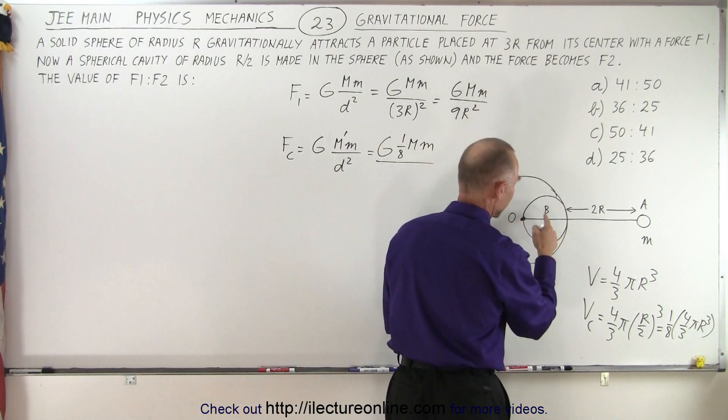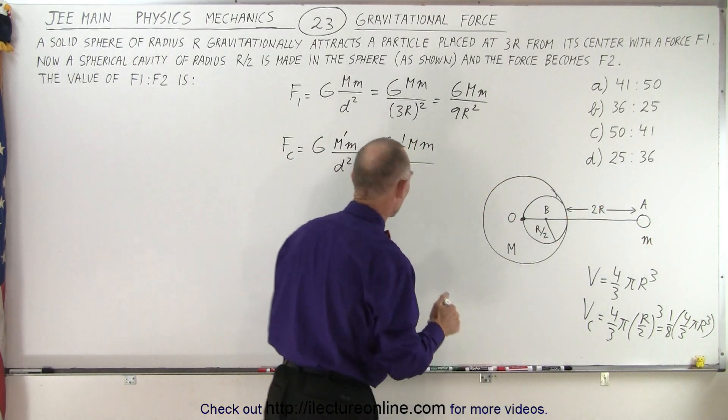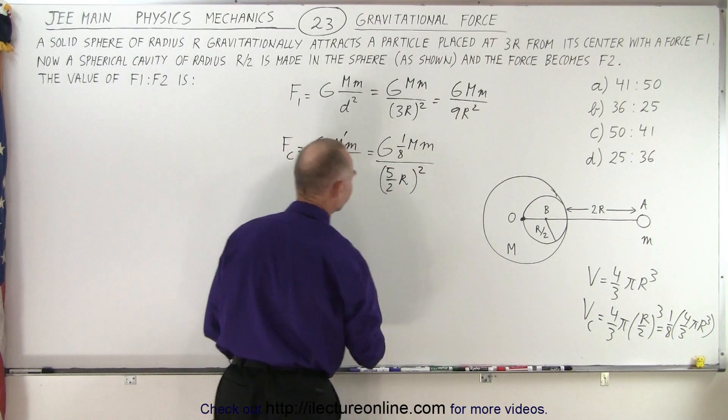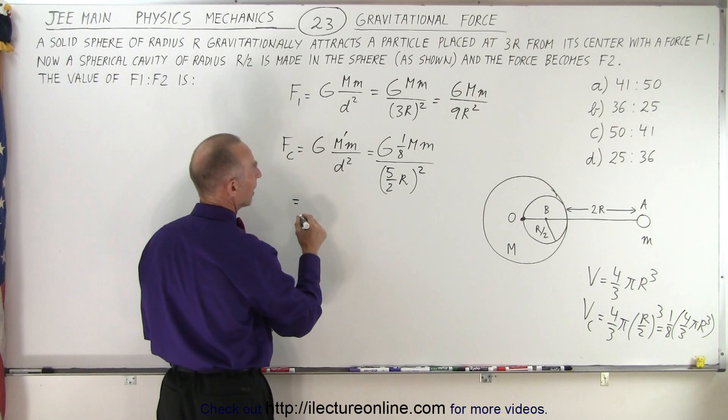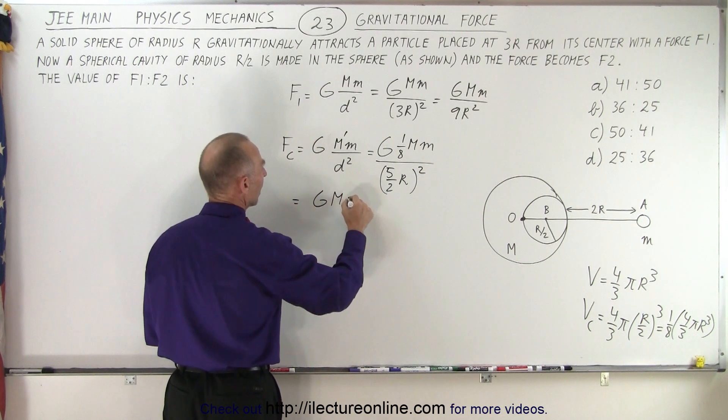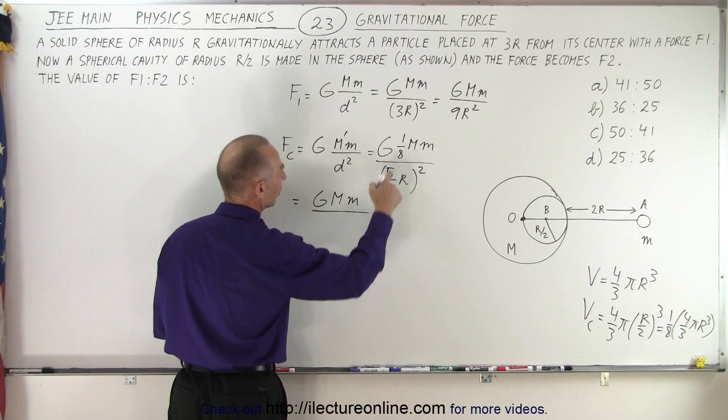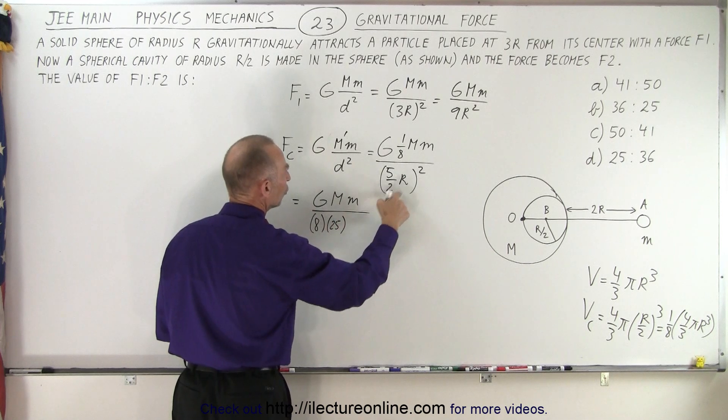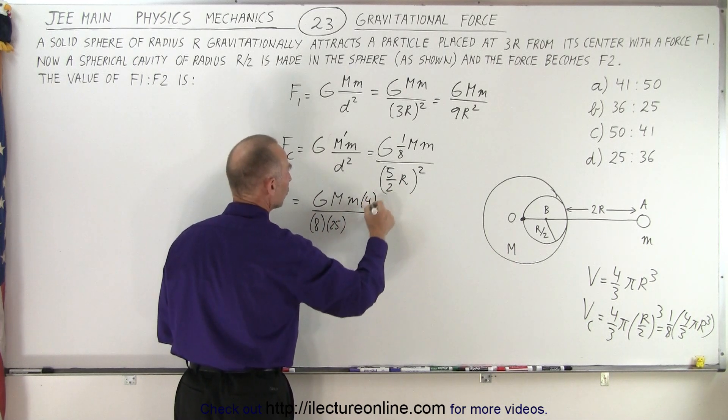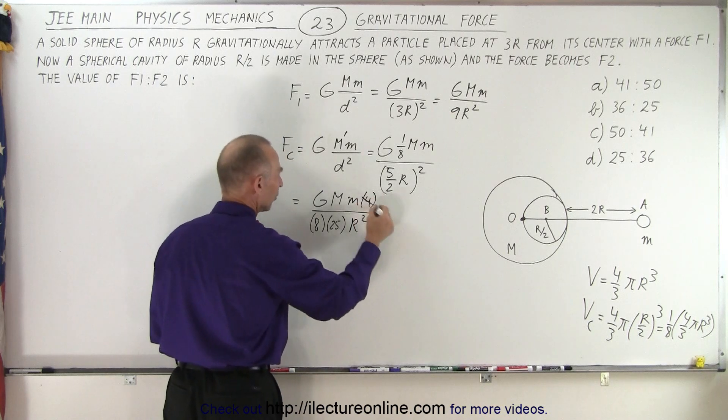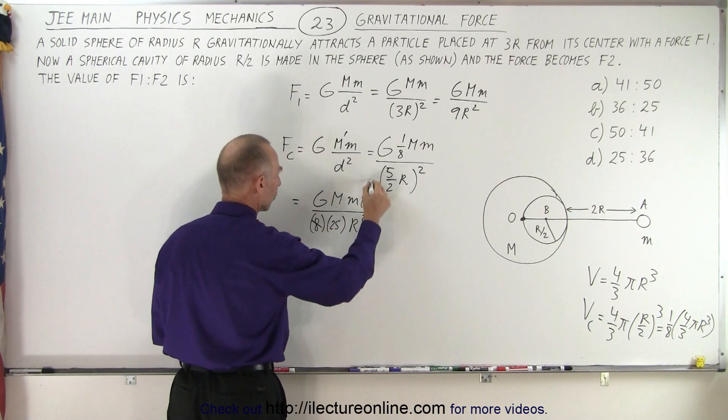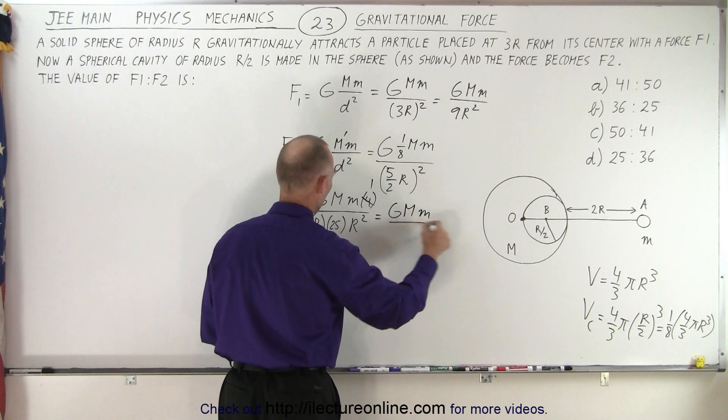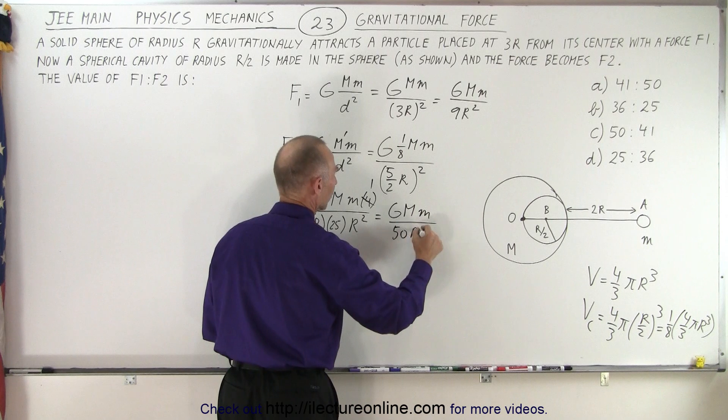Now the distance from here to here is 5/2 r. So we get 5/2 r and we have to square that. All right simplifying that I get GMm over, now 8 goes in the denominator, 5² becomes 25 and 2² becomes 4 in the numerator and then we have r², and of course this 4 and this 8 becomes 1 and 2. So this gives us GMm over 50r².